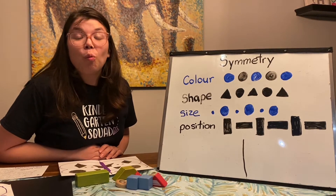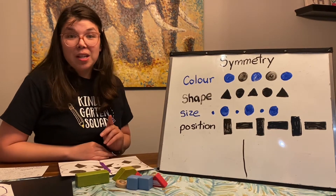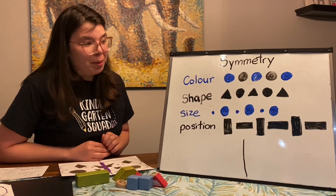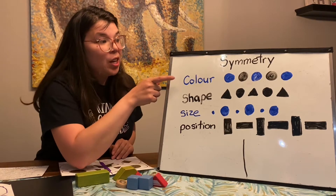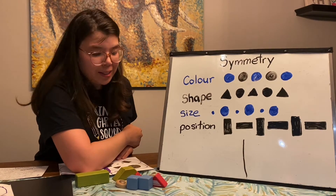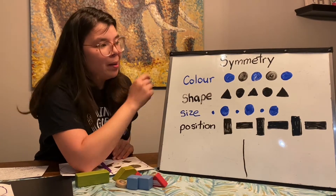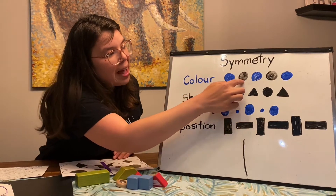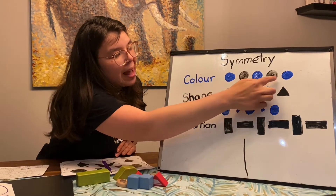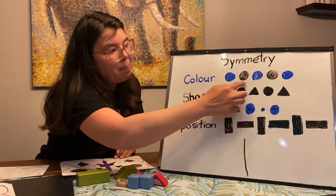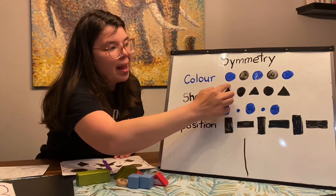One of the things you need to know before you do symmetry is your colors. So if you were doing a pattern of colors, that's an AB pattern — you might do blue, black, blue, black, blue. That's an AB pattern: A, B, A, B, A.